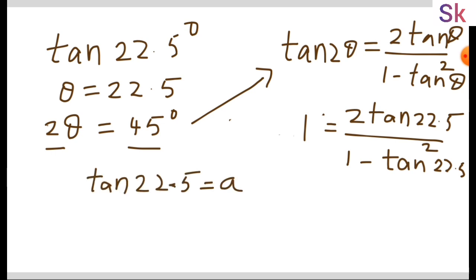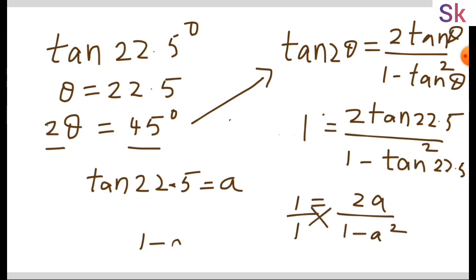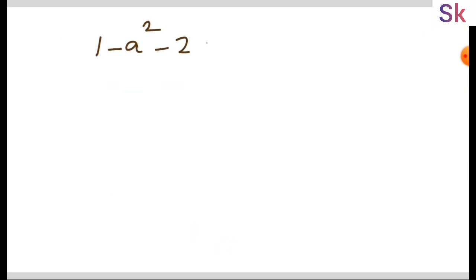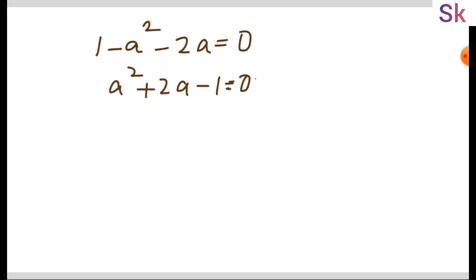Let us consider tan 22.5 as a. Then our equation becomes 1 equals 2a over (1 minus a²). Cross-multiplying gives 1 minus a² equals 2a, so 1 minus a² minus 2a equals 0, which rearranges to a² plus 2a minus 1 equals 0. This is our quadratic equation.